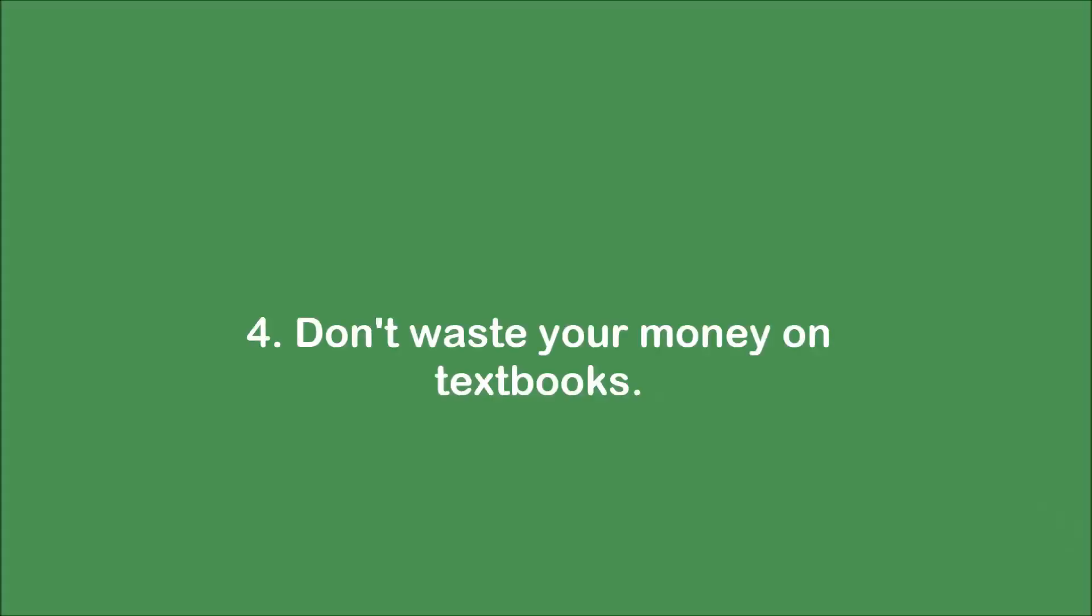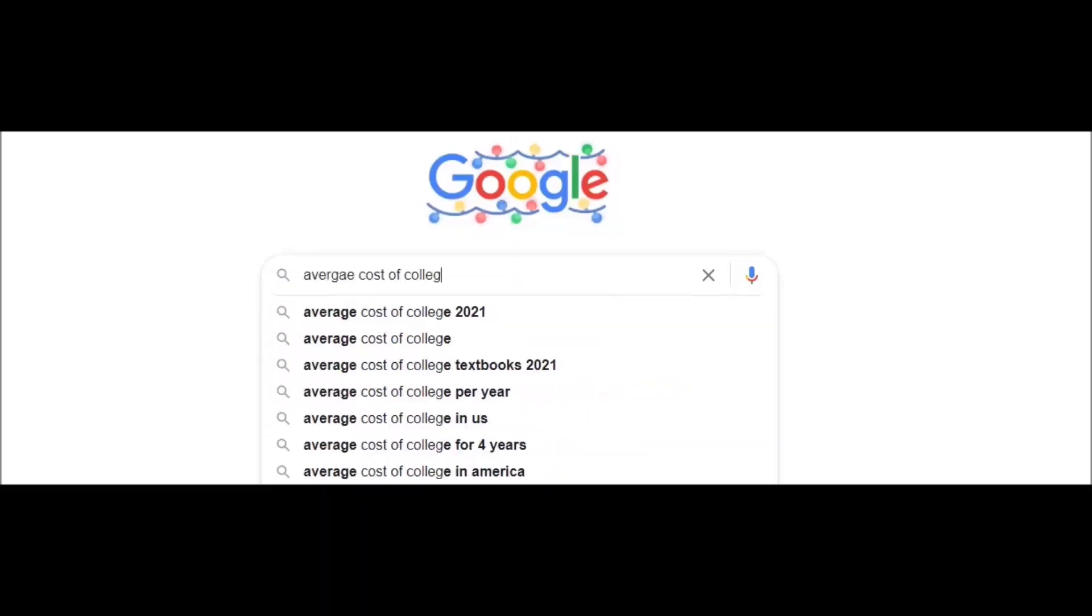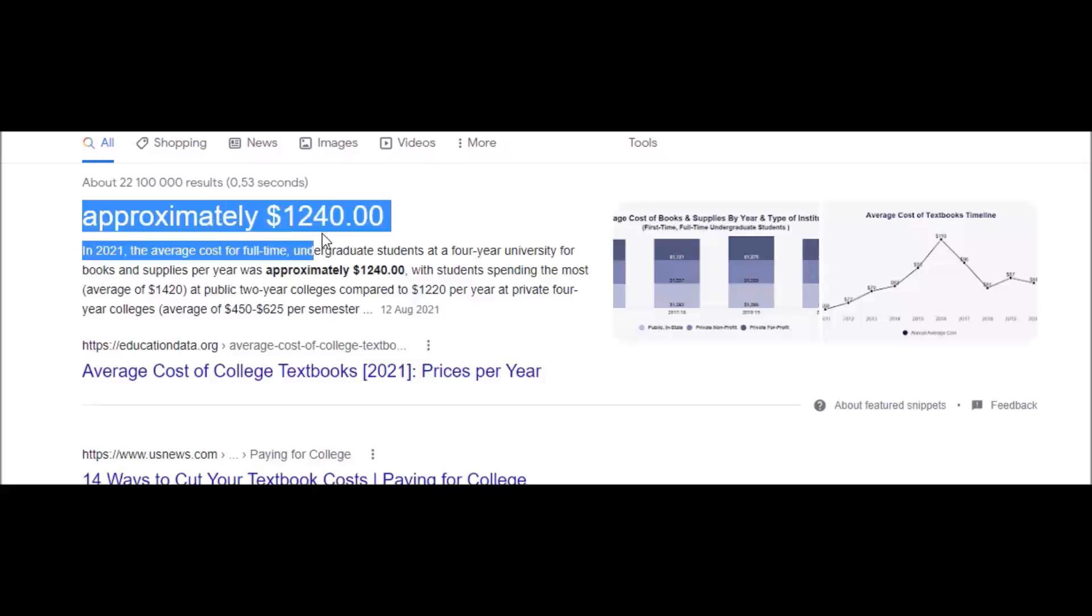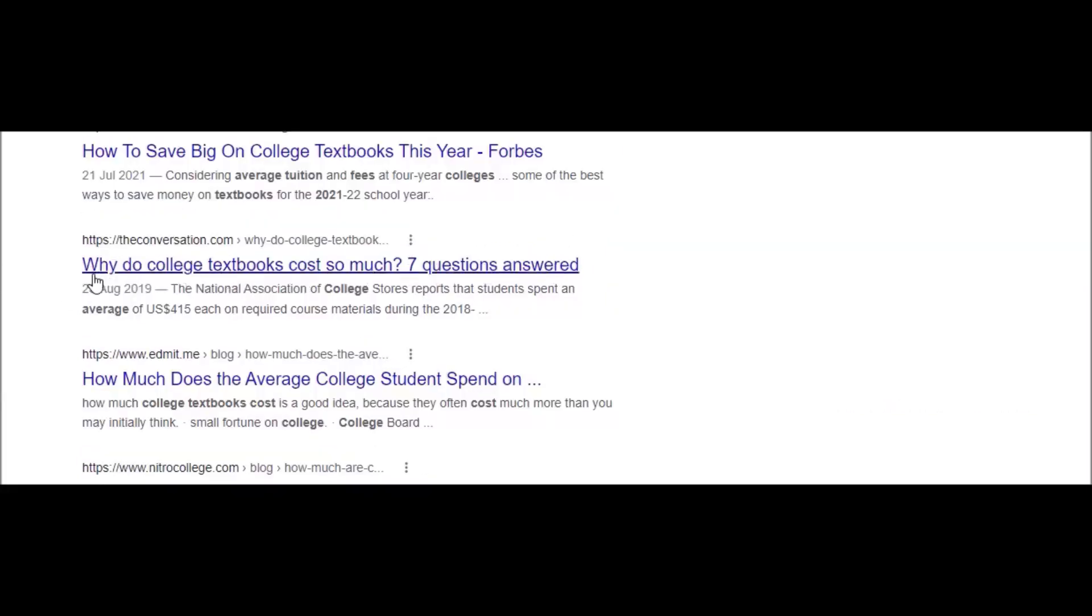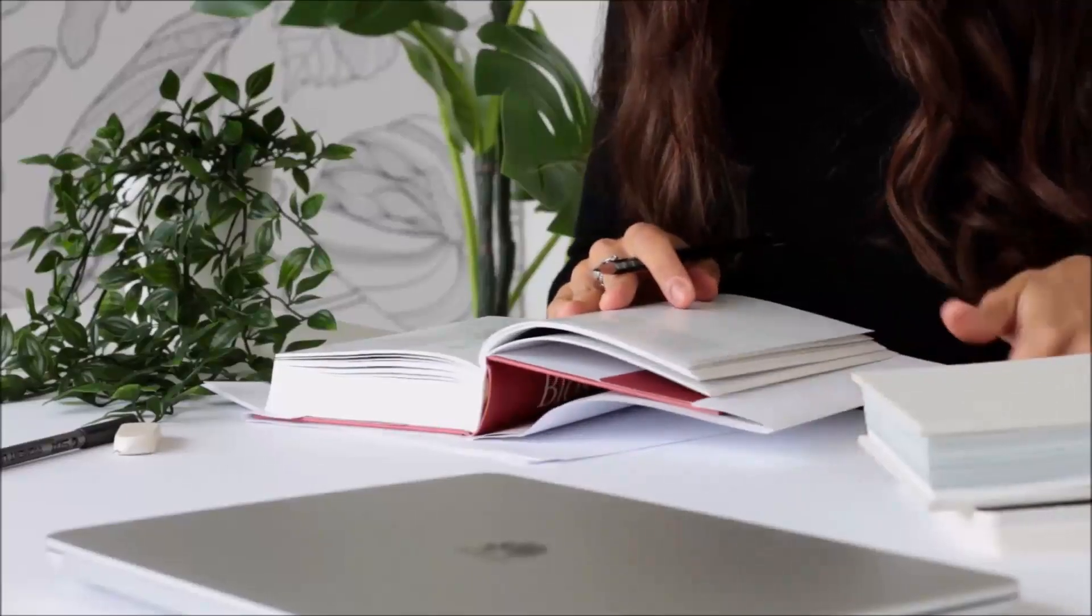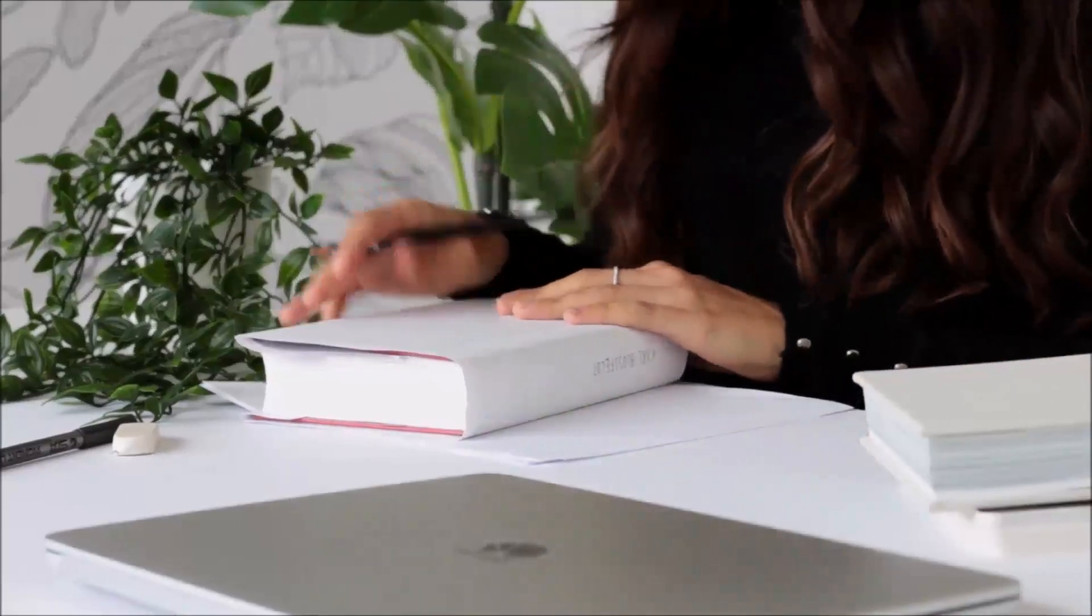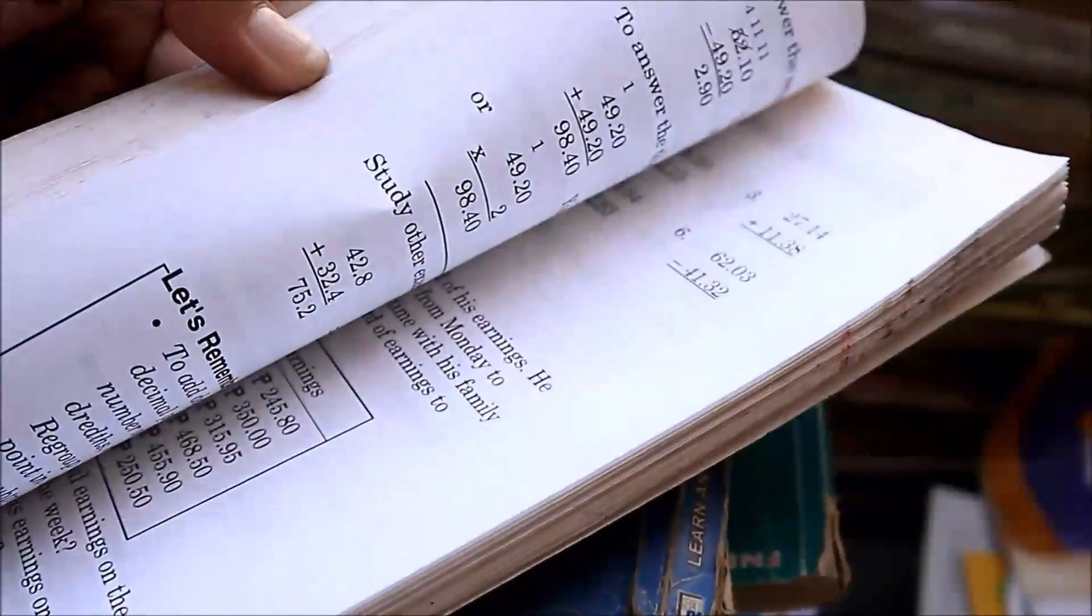Don't waste your money on textbooks. College textbooks are very expensive and not everyone can just go and purchase a 500 rand book, funding or no funding. The great thing is that most college textbooks are available to download somewhere on the internet for free. I have linked below a Google Drive folder with a bunch of textbooks you use for computer science and also websites where you can download others you may need.